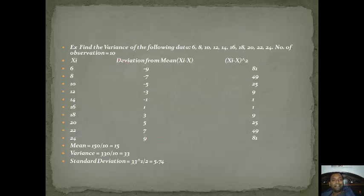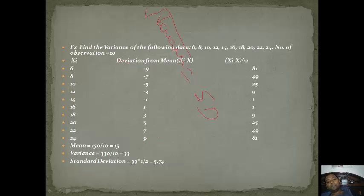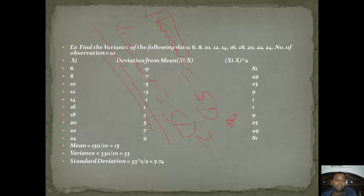Now coming to variance and standard deviation. The key formula is: standard deviation (SD) is the square root of variance, or equivalently variance equals SD squared. Suppose you have to calculate the variance of the following data; the number of observations is 10. We take the data values as xi, then proceed to calculate variance, which measures the variation in the data.